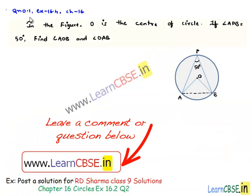Now, let us discuss question number 1 from exercise 16.4, chapter 16. In the figure, O is the center of circle. If angle APB is equal to 50 degrees, find angle AOB and angle OAB.